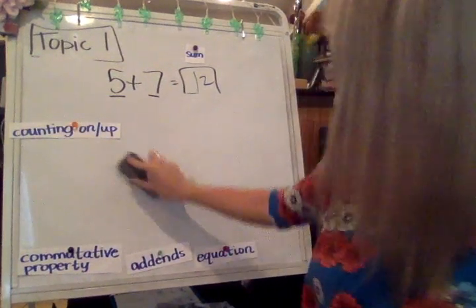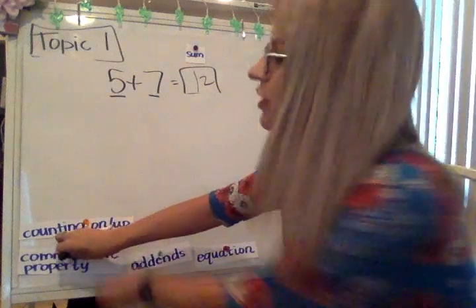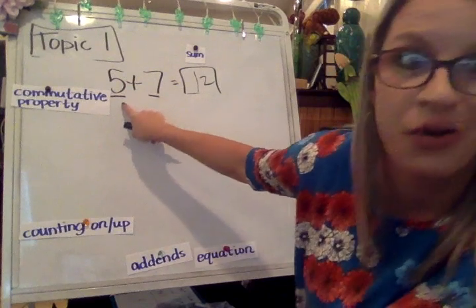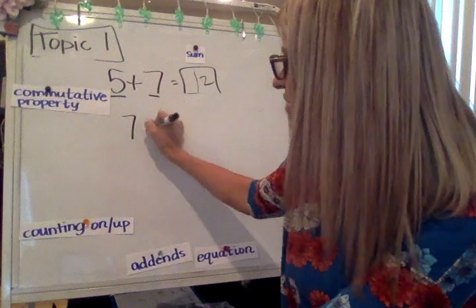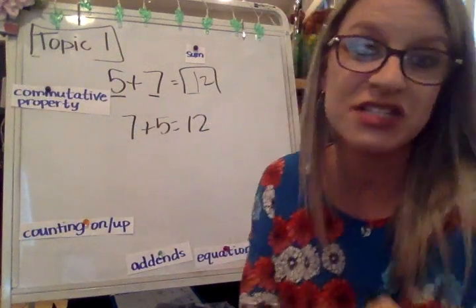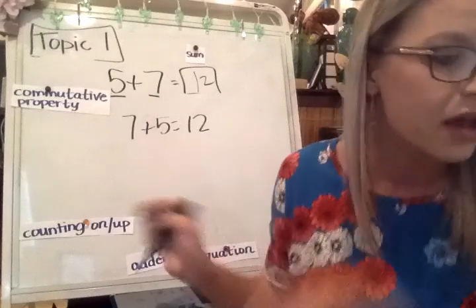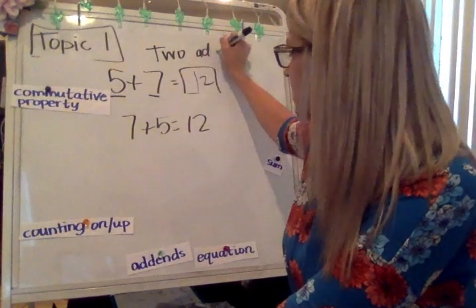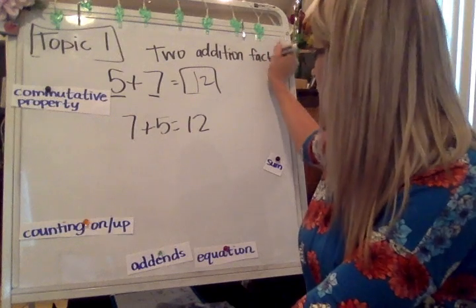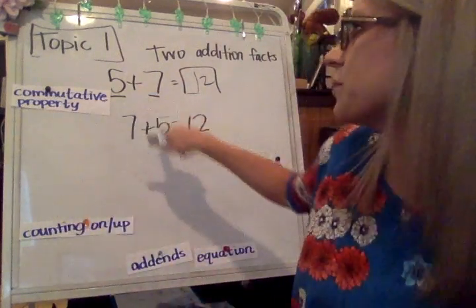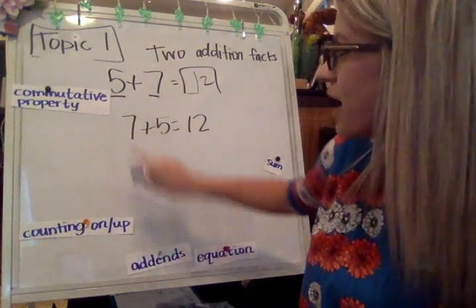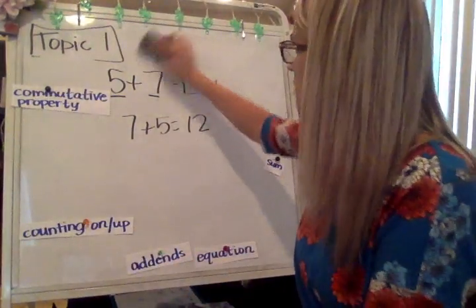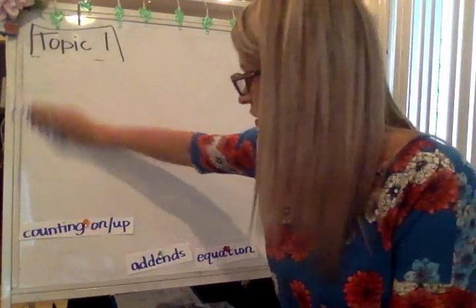Now I want to talk a little bit about how these addends can go in any order. Remember I told you that fancy word called commutative property. That just means that instead of just saying always 5 plus 7 equals 12, I could change it around and I could say 7 plus 5 equals 12. Here would be 2 addition facts. I've got the 5 in both of them and I've got the 7 in both of those. Those would be 2 addition facts that have the same answer using that commutative property.